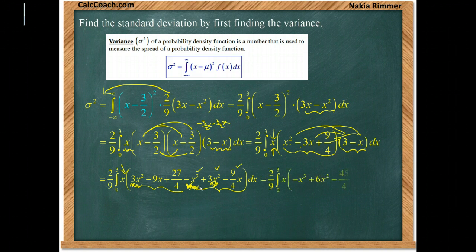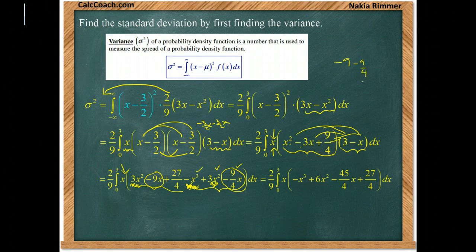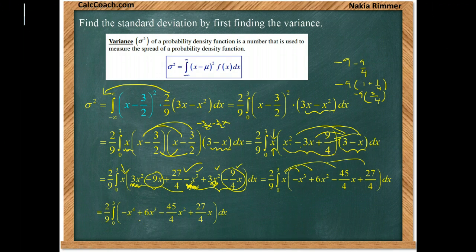As far as x's go if you have negative 9x and negative 9 fourths of x, you put that together, negative 9 minus 9 fourths. That's another one where you could factor out and be left with 1 plus 1 fourth which is 5 fourths. And so negative 9 times 5 fourths is negative 45 fourths and it's all times x. And then your 27 fourths the last term there. And now we'll put the x inside. Remember the 2 ninths is on the outside and we never integrate it. So on the next slide let's go ahead and find the antiderivative.